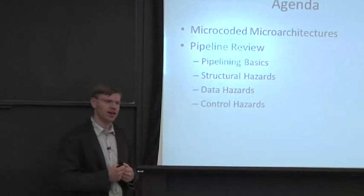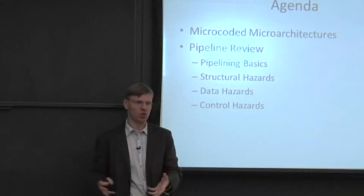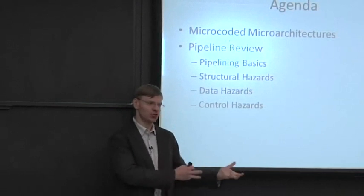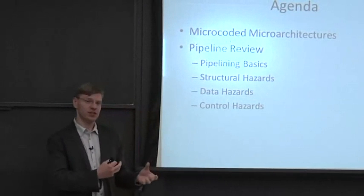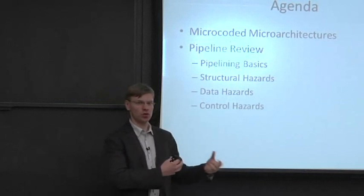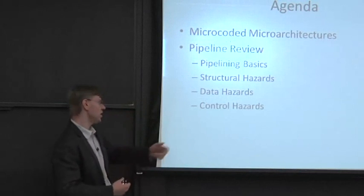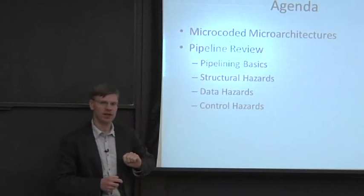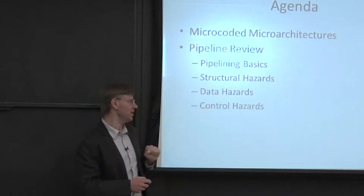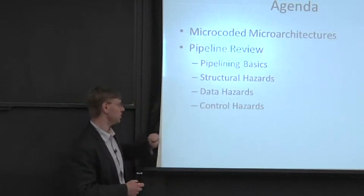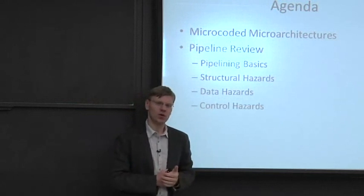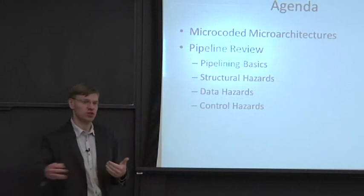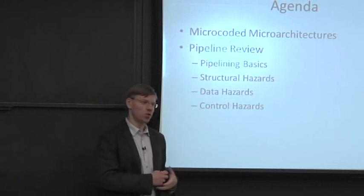Then we're going to talk about data hazards, where one instruction or operation is dependent on another in your pipeline but they're in different stages — so you might need to interlock, control, or stall between stages. Then we'll talk about control hazards, which involve an instruction that has to redirect the pipeline or change what instructions are flowing through it. We may hold off on control hazards depending on how far we get.